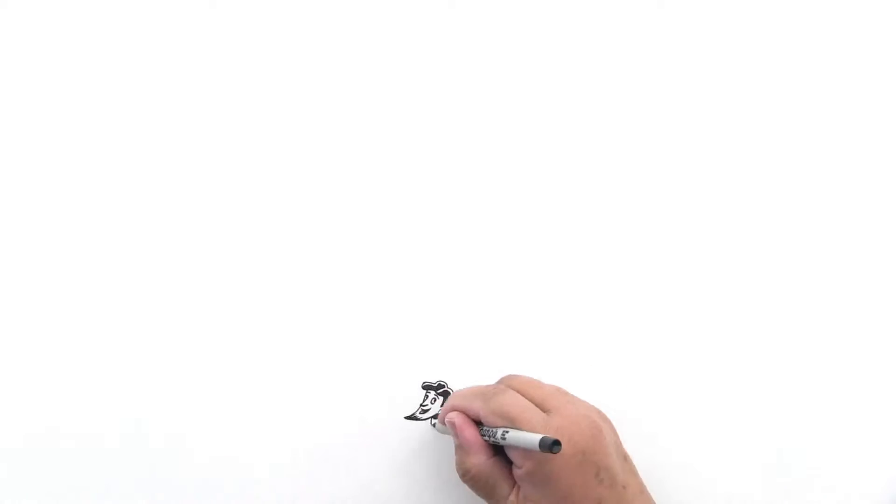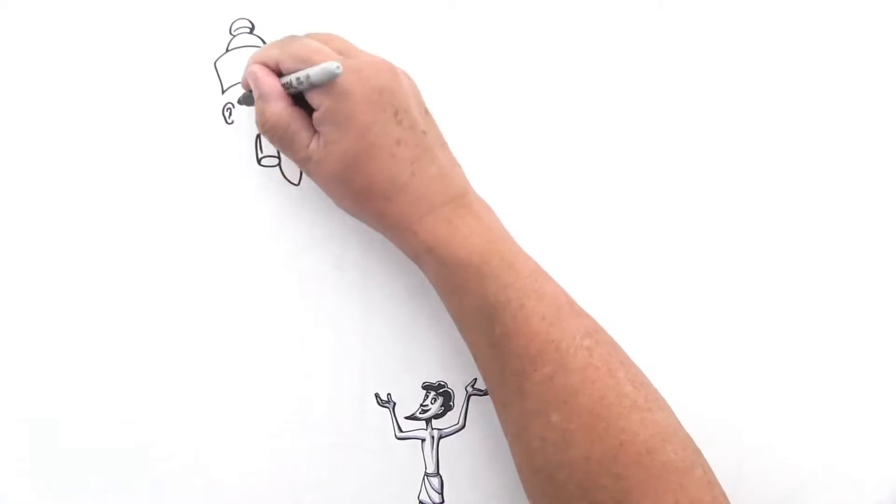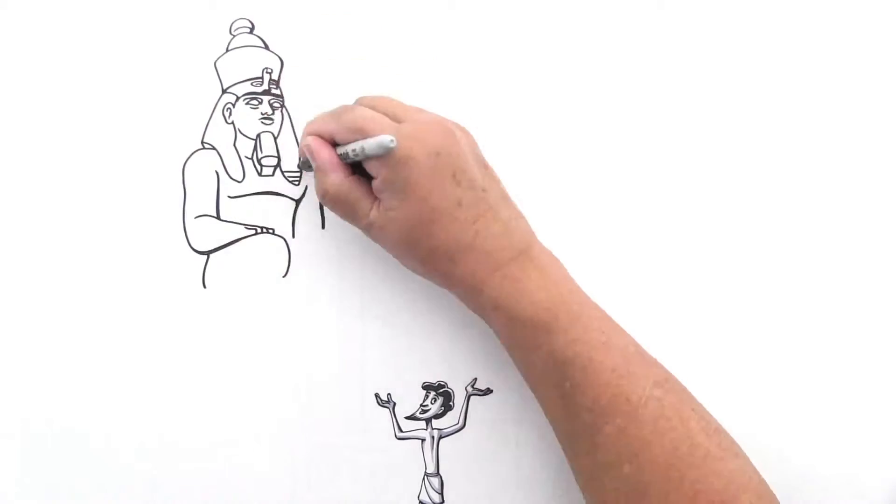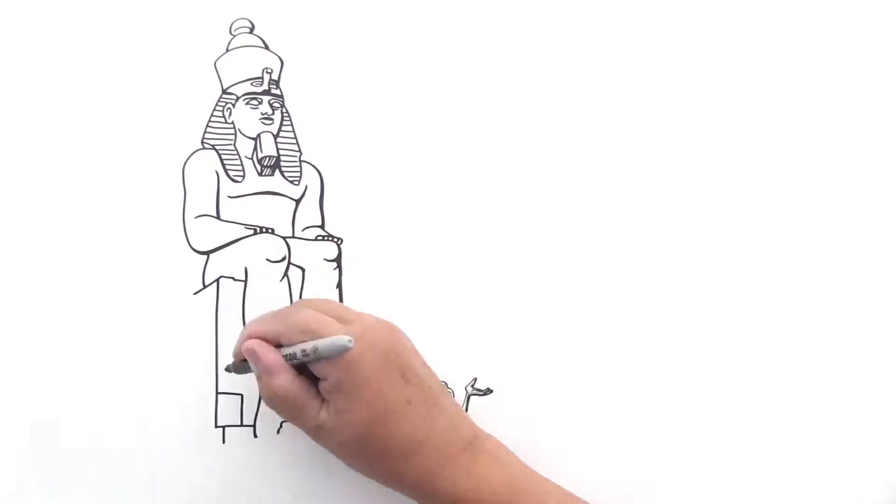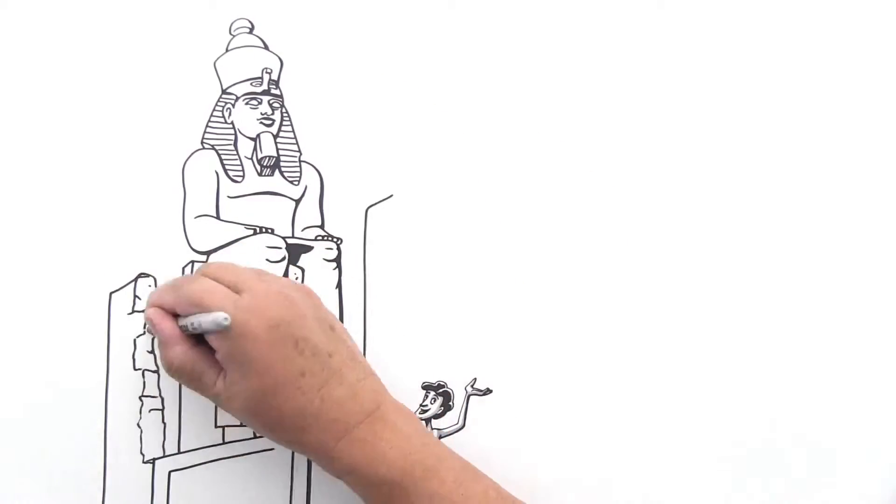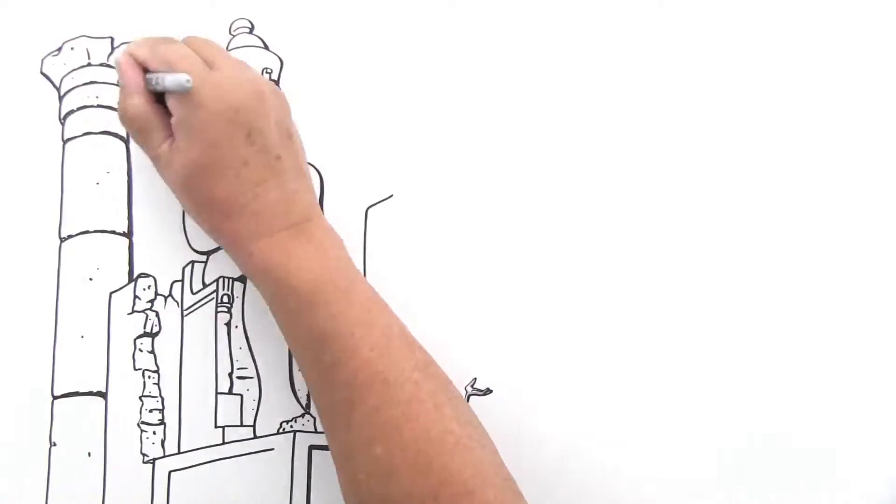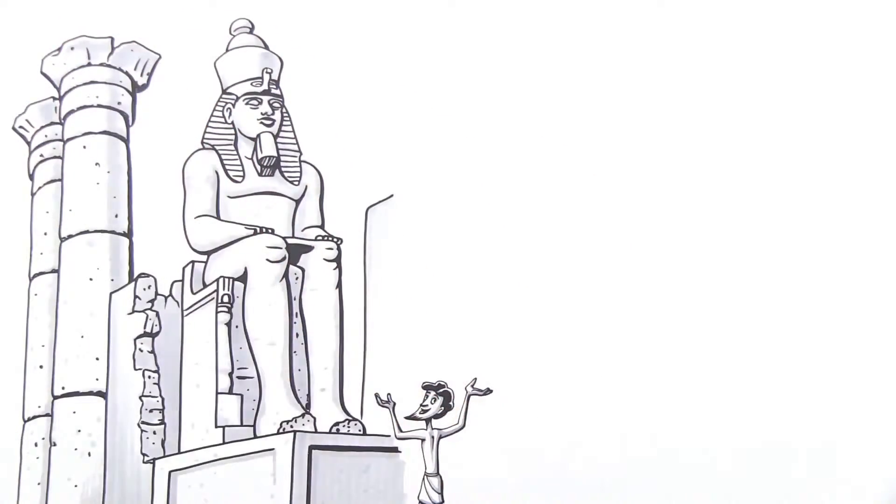Of course, the pharaohs themselves were considered the living gods. Pharaohs were portrayed according to specific rules that emphasized their perfect, unchanging nature. Usually, these representations included some symbols of authority like the royal headdress, the crook, and the flail, and a false beard.